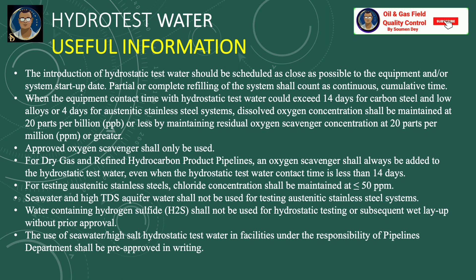Some useful information about hydrotest water selection: the introduction of hydrotest water should be scheduled as close as possible to the equipment and/or system startup date. Partial or complete refilling of the system shall count as continuous cumulative time. When equipment contact time with hydrotest water exceeds 14 days for carbon steel and low alloys, and 4 days for austenitic stainless steel systems, dissolved oxygen concentration shall be maintained at 20 ppb or less by maintaining residual oxygen scavenger concentration at 20 ppm or greater. Approved oxygen scavengers shall be used.